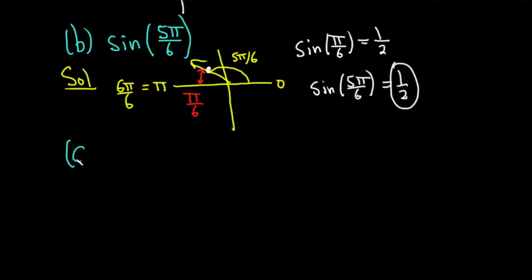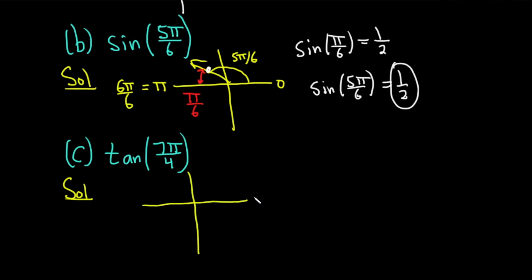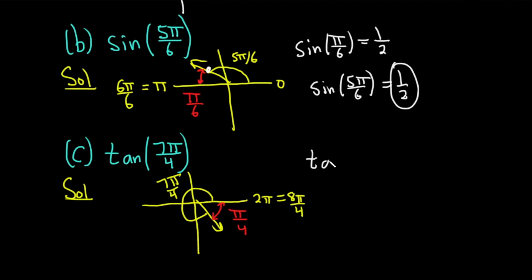Let's do another one — part C. This time, let's do something with tangent. We have the tangent of 7 pi over 4. We'll start with the picture. 7 pi over 4 is a pretty big angle — here's 2 pi, and you can think of 2 pi as 8 pi over 4. So 7 pi over 4 is going to be this angle here, just a little bit smaller than 8 pi over 4. The reference number is simply pi over 4 because that's the distance between 8 pi over 4 and 7 pi over 4. We compute the tangent of our reference number: the tangent of pi over 4 is just 1. That's because it's the sine of pi over 4 over the cosine of pi over 4, and both of those are the square root of 2 over 2, so you get 1.